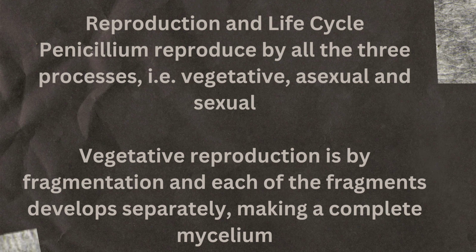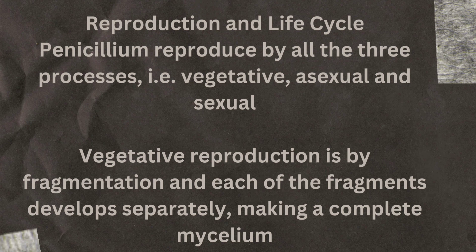Penicillium reproduces in three ways: vegetative, asexual and sexual reproduction. Vegetative reproduction occurs by fragmentation, where each fragment develops separately to form a complete mycelium. So this was vegetative reproduction, which occurs by fragmentation.